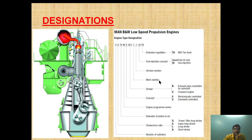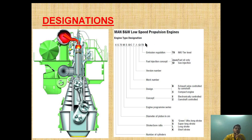The 7 is the Mark number and .1 is the version number, indicating the modification level. GI stands for gas injection, meaning the injection mode is gas injection. If this field is blank, it means fuel oil only. T13 indicates the IMO tier level of NOx emission regulation. This is the complete designation of the MAN B&W ME engine.